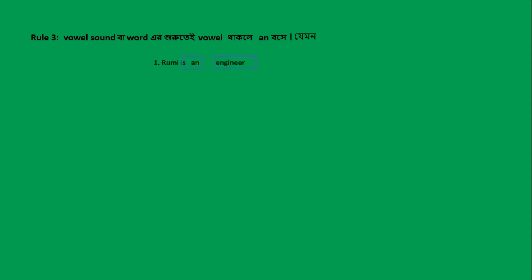Rule 3-তে বলা হচ্ছে — ভাওয়েল ছাড়া বা word যদি vowel দিয়ে শুরু হয়, তাহলে 'an' বসে। যেমন — I am an engineer। এখানে 'engineer'-এর প্রথম অক্ষর 'E' — সেটার উচ্চারণ vowel sound।